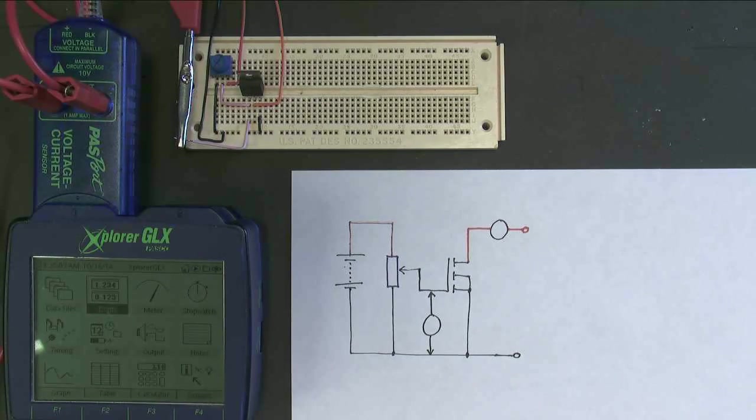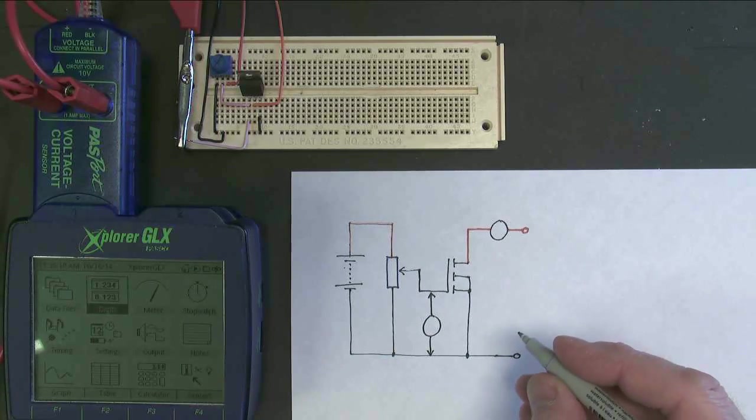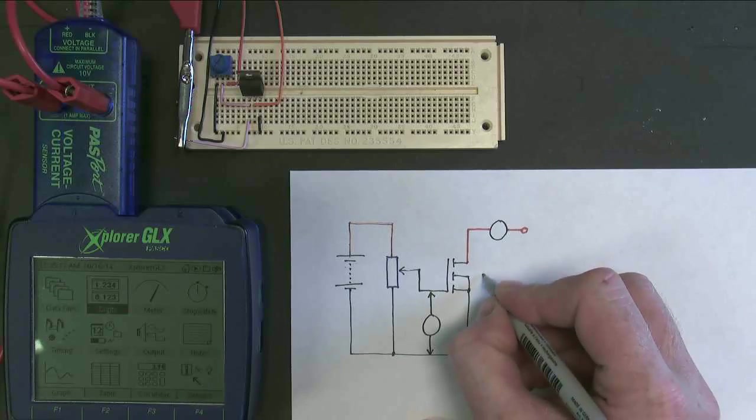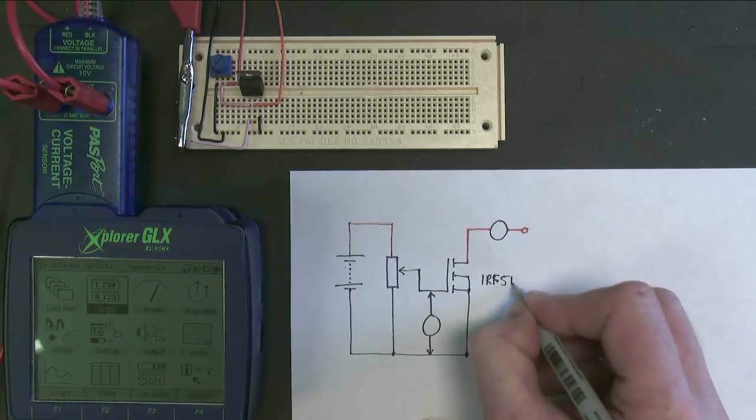In this little video, I'm going to talk about the MOSFET, and this is the symbol for a MOSFET just here. The MOSFET that I'm going to be using is actually a power MOSFET, so it's called an IRF510.